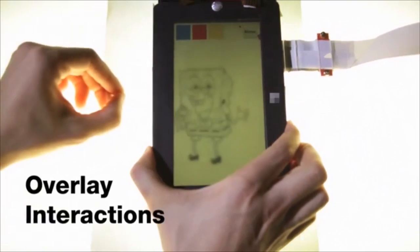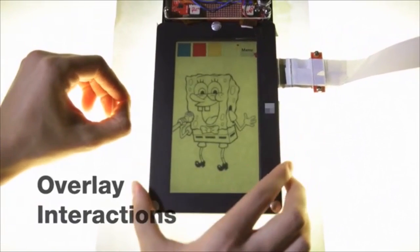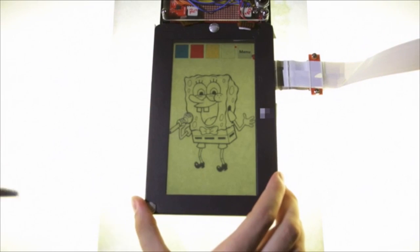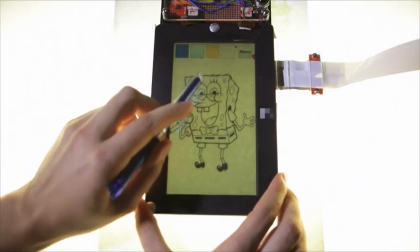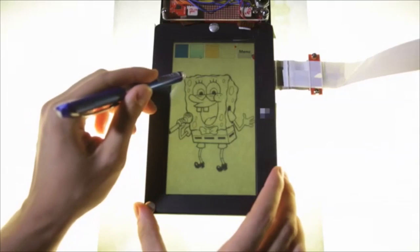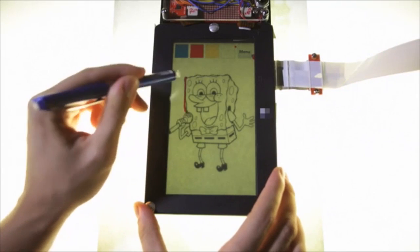The first category is overlay interactions, where users simply place the T-Pad on top of a physical object and manually superimpose content on it. For example, users can trace an image directly through the transparent display.